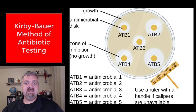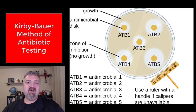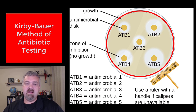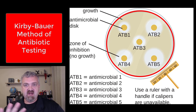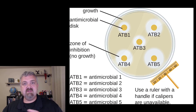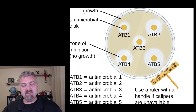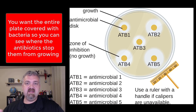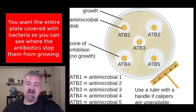Here you see an example of the Kirby-Bauer disk diffusion method. What you do is put a confluent lawn of organisms on a plate. That means you're going to cover the entire plate. Usually when students are working with plates, we're doing streak plates or pour plates, trying to spread bacteria out and separate them. In this case you want to cover the entire plate with microbes, so you spread a confluent lawn.